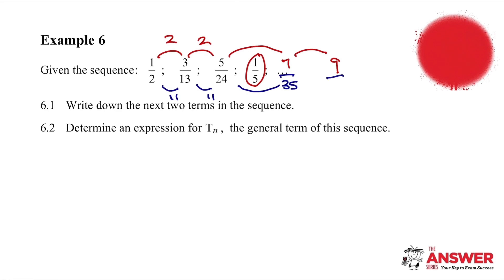We are going to put in the next term by adding 11, so we're going to get 46. Then we have to do one more term. So if we add 11 to 46, we are going to get 57. Go back to the numerator and add 2 to 9, we are going to get 11. So we've generated the next two terms.